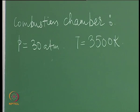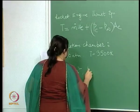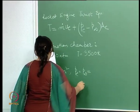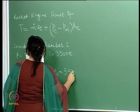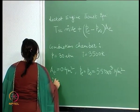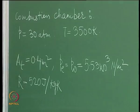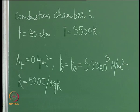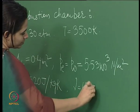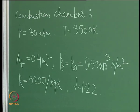Regarding the nozzle, some other parameters are given. The area at the throat A* is given as 0.4 meter squared. Pressure at the exit is essentially the ambient pressure. The universal gas constant R is given in joules per kg·Kelvin. The ratio of specific heats gamma is given as 1.22, and we assume isentropic flow as the gas expands.